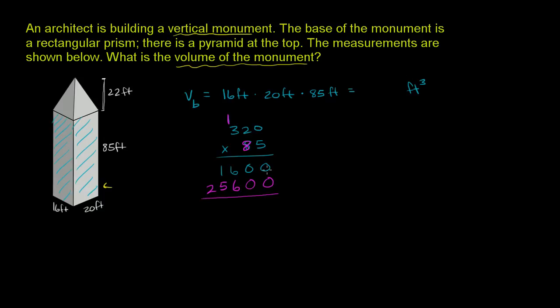25, and then we add them all up. 0 plus 0 is 0. 0 plus 0 is 0. 6 plus 6 is 12. And then 2 plus 5 is 7. And then you bring down the 2. So 27,200 cubic feet.